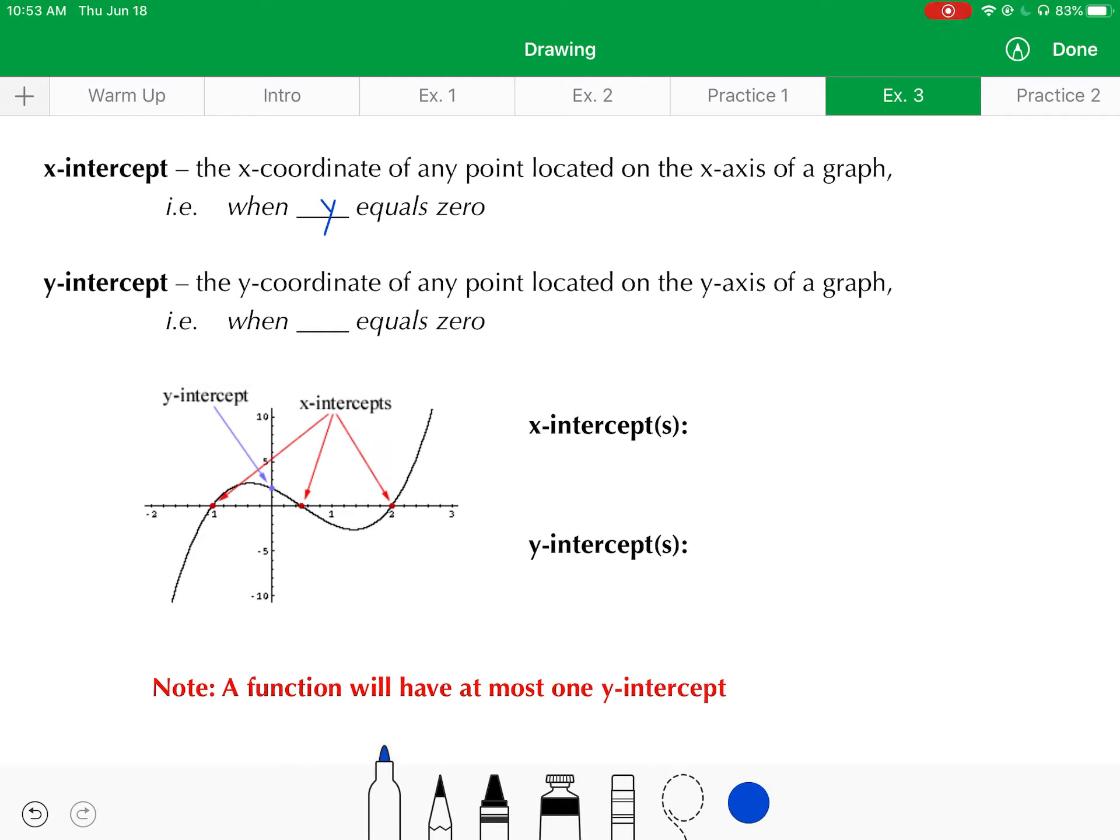Y-intercepts are just the opposite. Y-intercepts are the y-coordinates of any point located on the y-axis of a graph, which would mean that's when your x-value equals zero, your x-coordinate. So notice in the graph here, there are three x-intercepts. I would say they are located at x equals negative one, one-half, or 0.5,